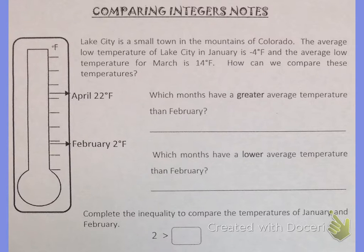If you look to the left there's a little thermometer and we can see that there are two temperatures on the thermometer already and those are for April and February. Let's go ahead and number or label the little lines on the thermometer so that we know exactly where the temperatures are on here.